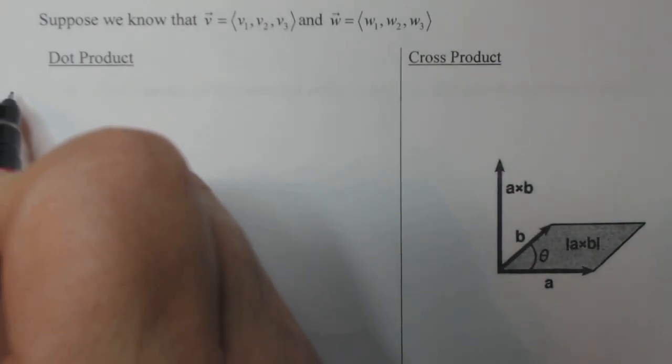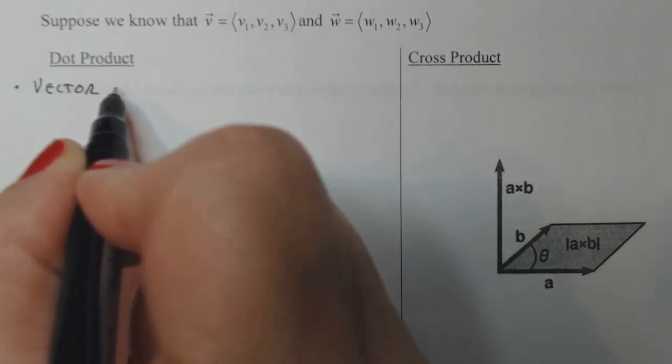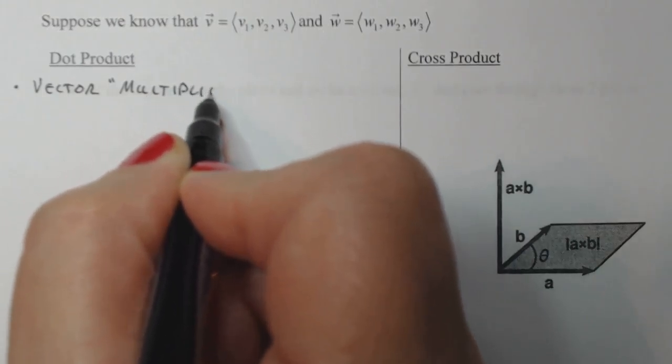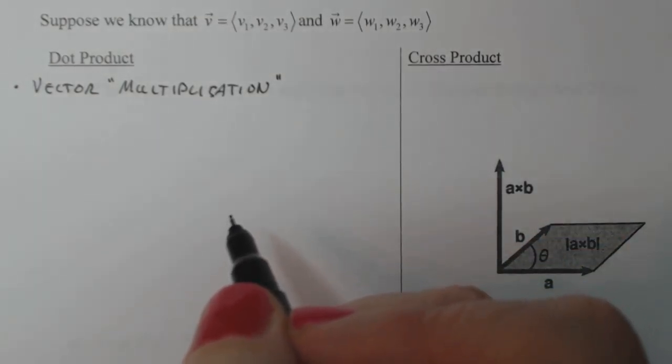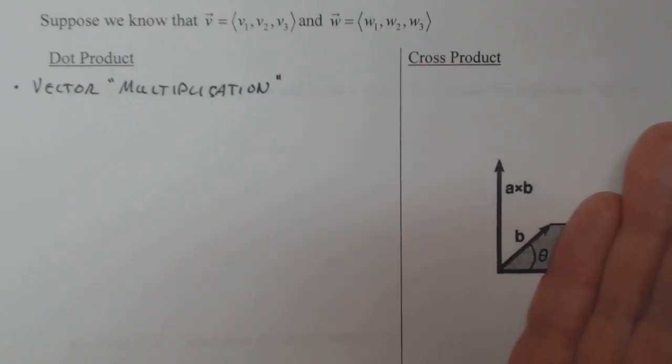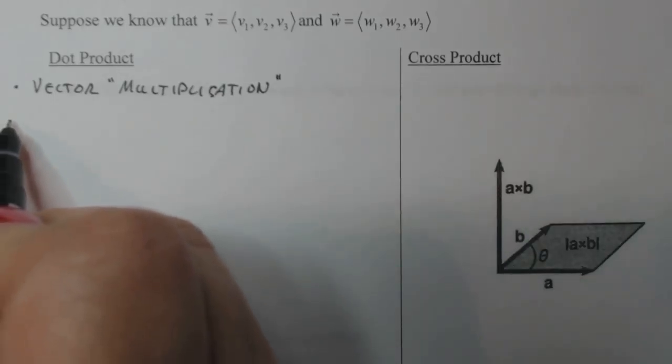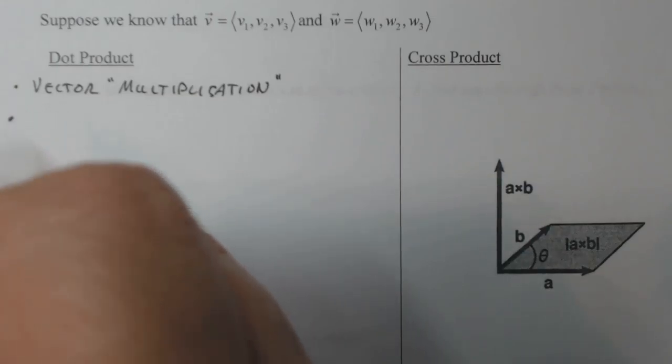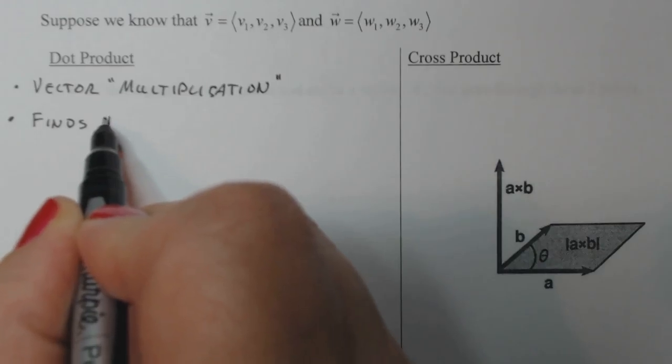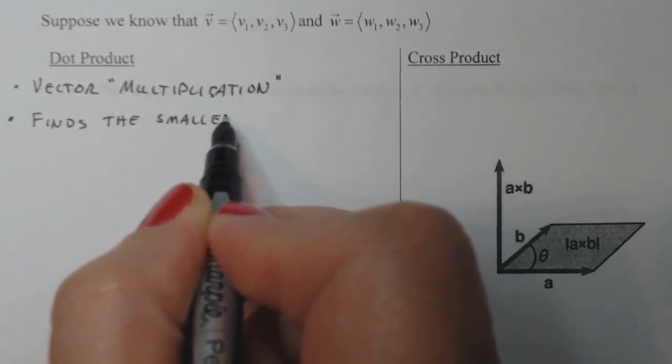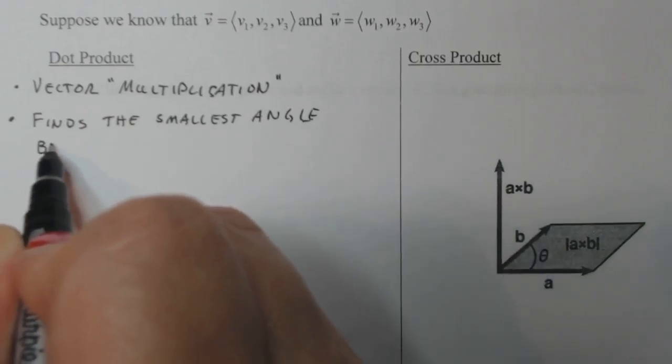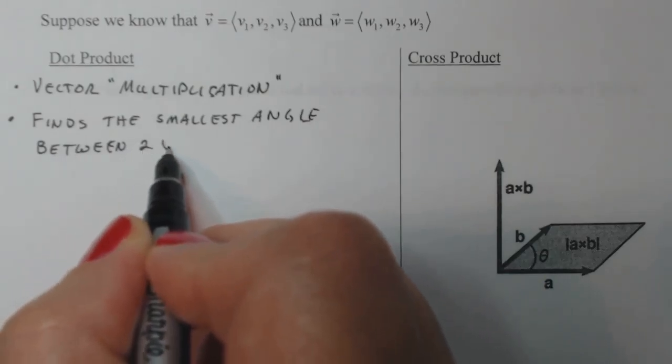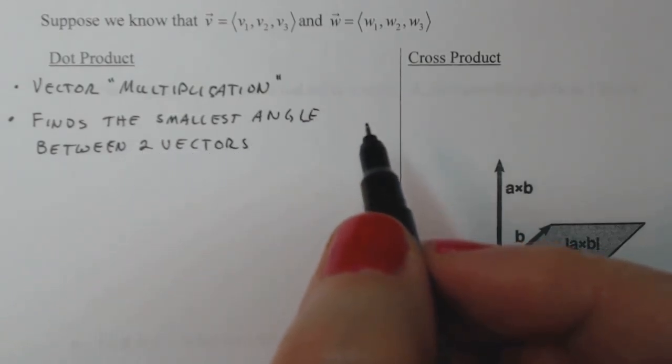Let's talk about the dot product. The dot product is a type of multiplication we call vector multiplication. Technically it isn't the multiplication we know and love like we use in real numbers, but it is what we call multiplication in vectors. What dot product does for us is it finds the smallest angle between two vectors.